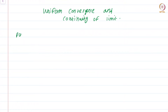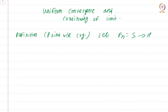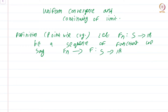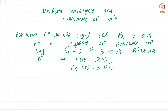Let us begin with the definition of pointwise convergence. Let f_n from S to R be a sequence of functions. We say f_n converges to the function f from S to R pointwise if for each x in S, f_n(x) converges to f(x).